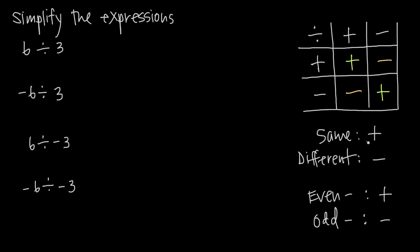In other words, if our signs are the same, we're going to get a positive answer. If our signs are different, we're going to get a negative answer. But keep in mind that this logic only works when we have just two numbers involved. Let's go ahead and apply this to some of the examples we have here.